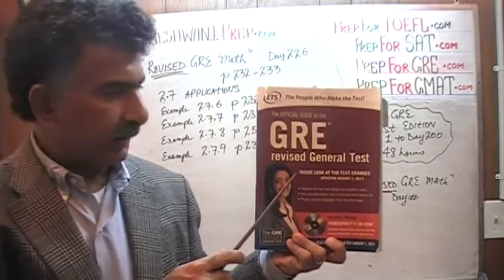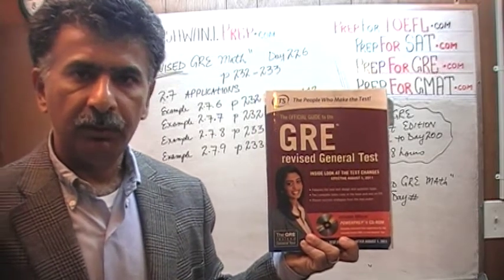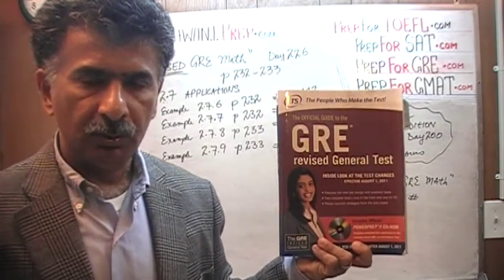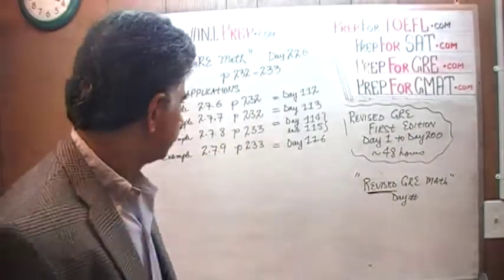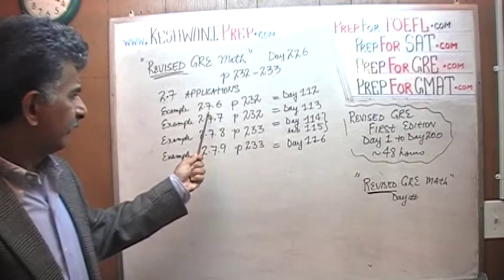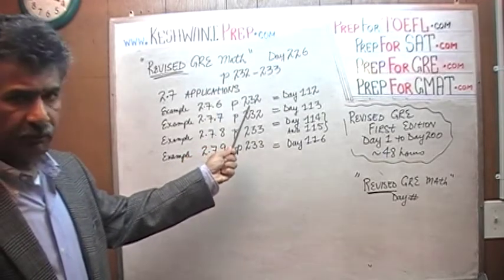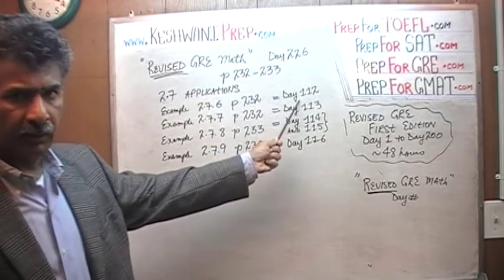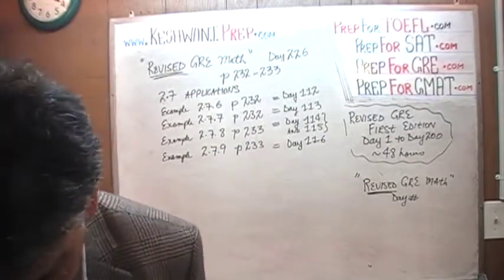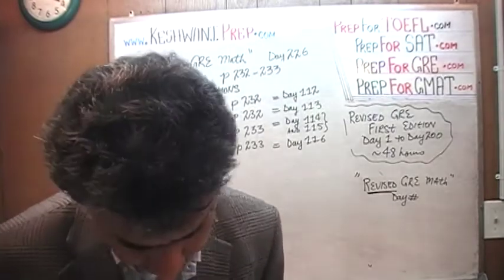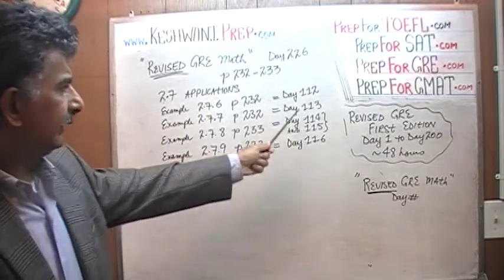Since I have already solved all the problems in this book, I am not going to redo them. I am simply going to tell you the day number that you need to go to to watch the solutions. Example 2.7.6, on page 232, you will find a solution on day 112. Problem number 2.7.7, day 113.